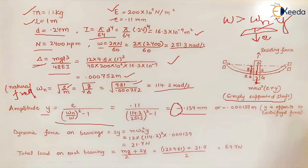Because of this opposite deflection of shaft, there is dynamic force on the bearings. What is the force on the bearings? It is equal to the resisting force of the shaft which is equal to Sy, where S is the stiffness of the shaft.